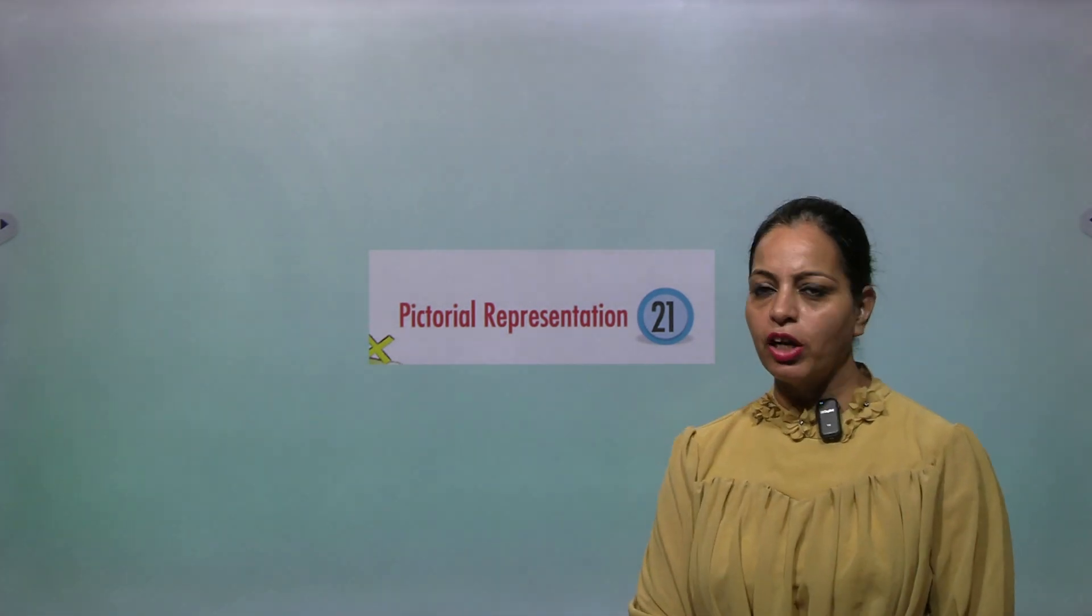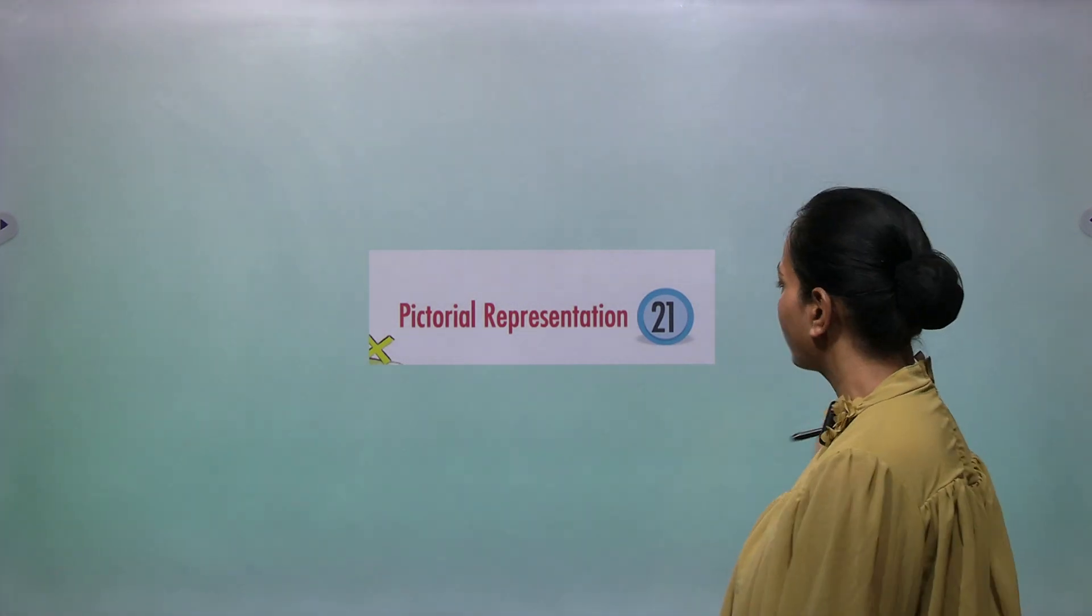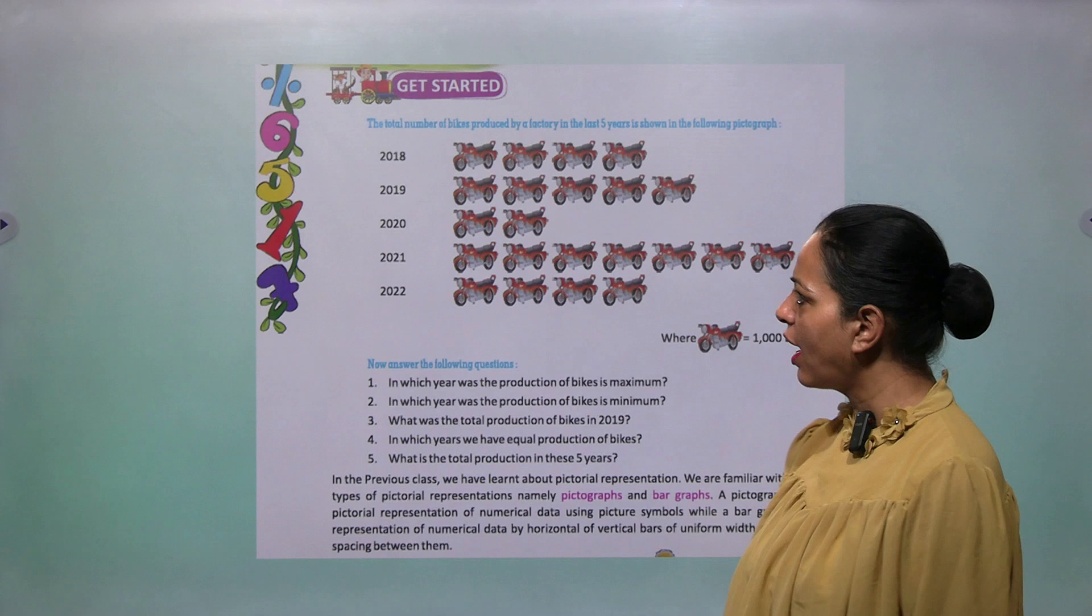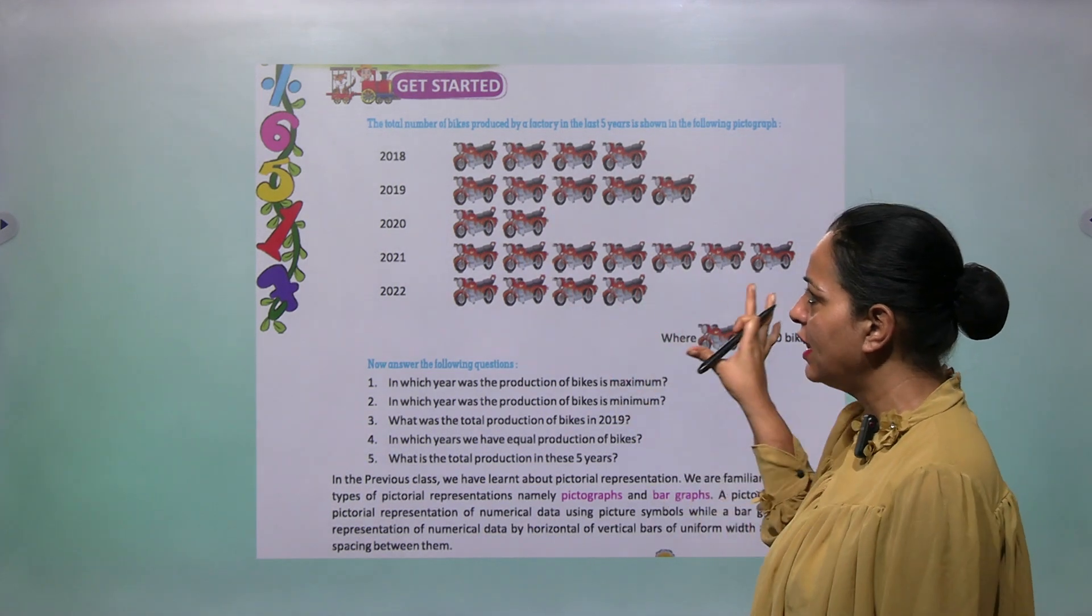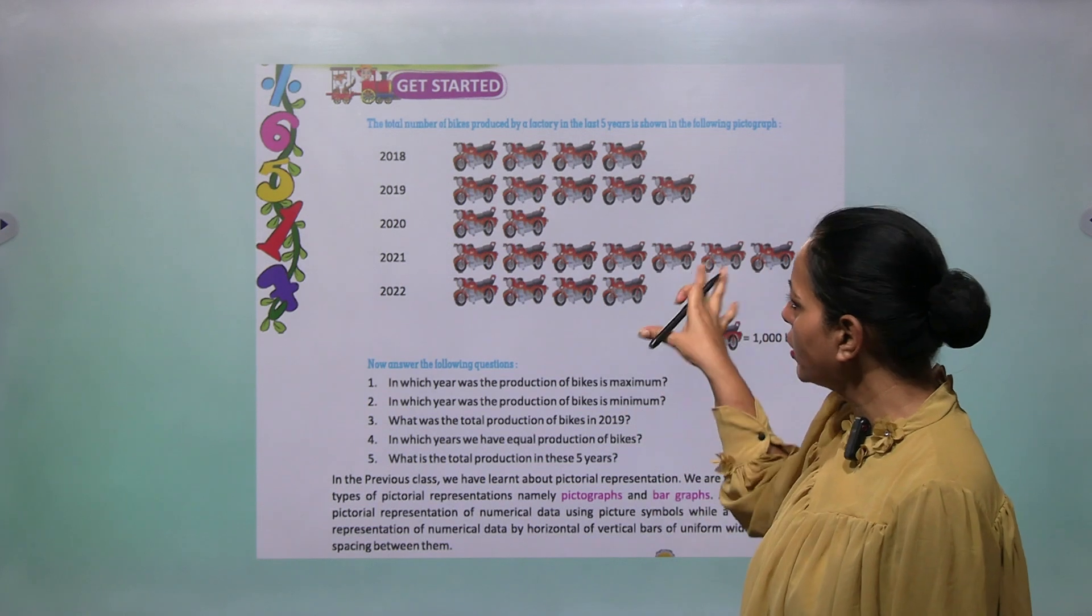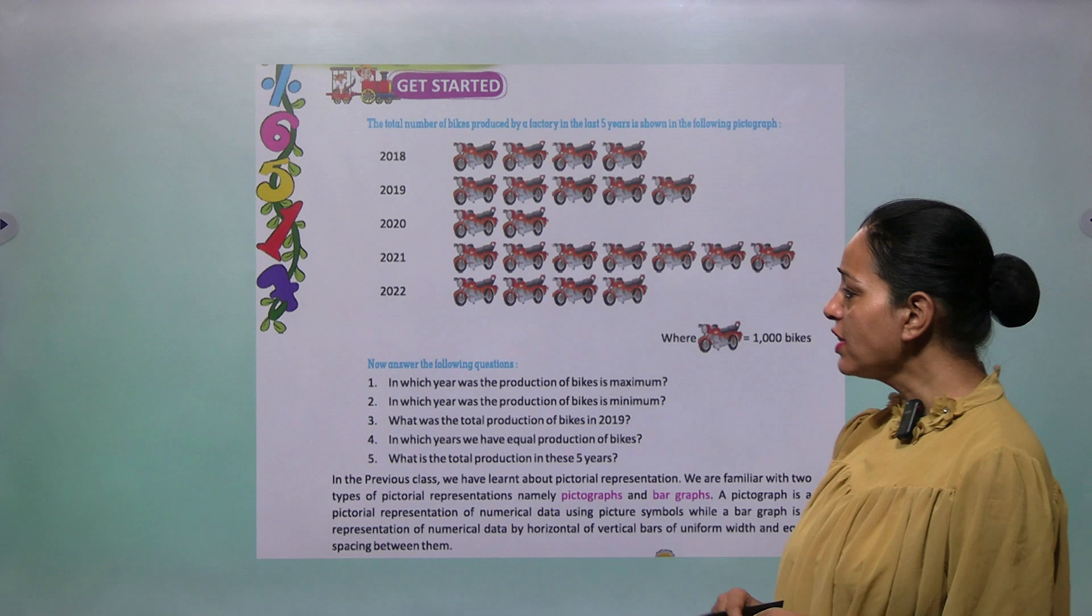Hello kids, this is your mentor Newton. We are doing Chapter 21, Pictorial Representation of Class 5. So let's get started. You have done in your previous class, like this figure you can see, a beautiful figure is given over here. By using this figure you can answer some questions over here.